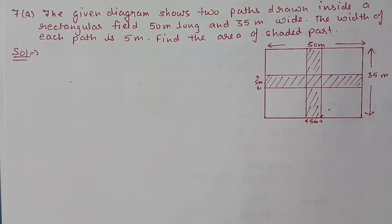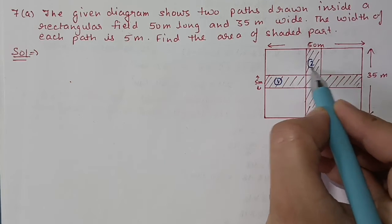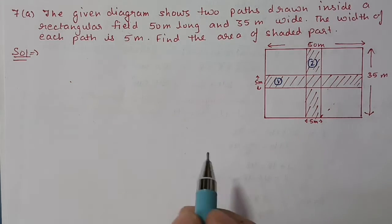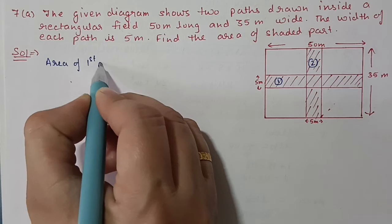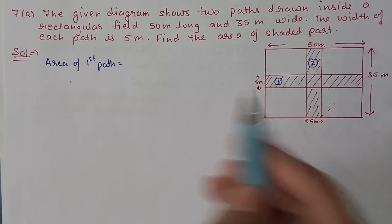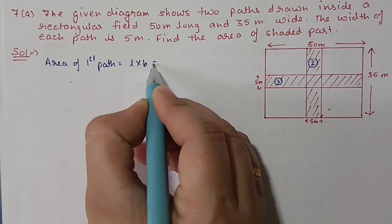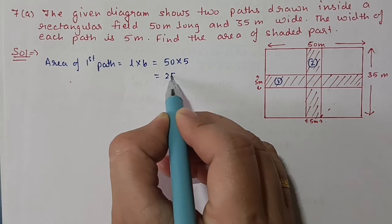Next we have question number 7a. The given diagram shows two paths drawn inside a rectangular field 50 meters long and 35 meters wide. The width of each path is 5 meters. Find the area of the shaded path. So this shaded path has two parts — first one and second one. Area of the first path equals length times breadth: 50 times 5 equals 250 square meters.